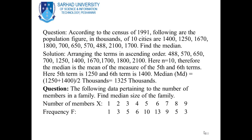Question: According to the census of 1991, the population figures (in thousands) of 10 cities are: 1400, 1250, 1670, 1800, 1700, 1655, 570, 1488, 1100, 1700. Find the median. Arranging in ascending order: 488, 570, 650, 700, 1250, 1400, 1670, 1700, 1800, 1100. Here n = 10, so the median is the mean of the 5th and 6th items: (1250 + 1400)/2 = 1325.